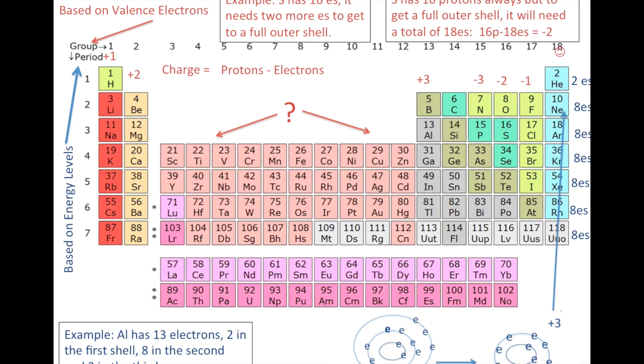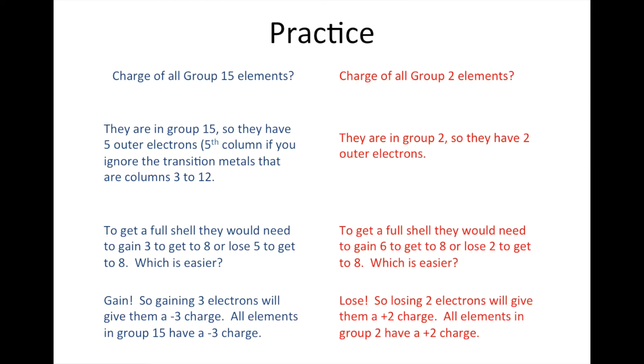So I would advise you to go through this video again because that was pretty fast, but I'm going to do a couple more examples. So this is just kind of going through it a little bit. So for practice, if you look on the blue, you can see the charge of all group 15 elements. Since they're in group 15, they have five outer electrons. They're the fifth column if you ignore the transition metals that are columns three through 12. To get a full shell, they'll need three more, or they could lose five. Which is easier, gaining three or losing five to get to eight? Obviously gaining three. So gaining three more electrons, each electron is negative, so gaining three will be a negative three charge. All elements in group 15 have a negative three charge.